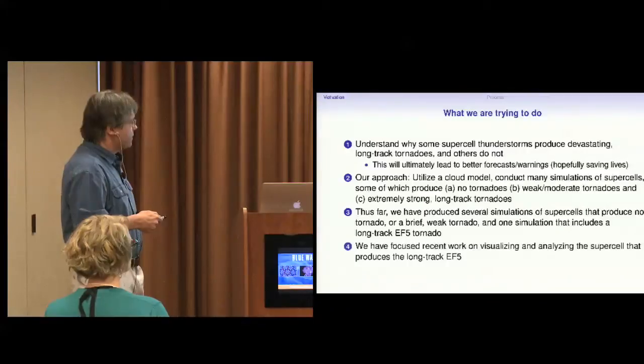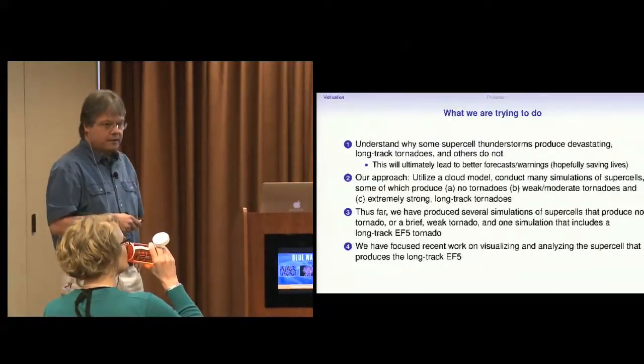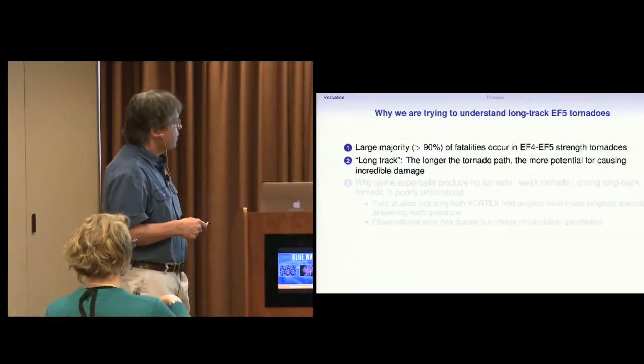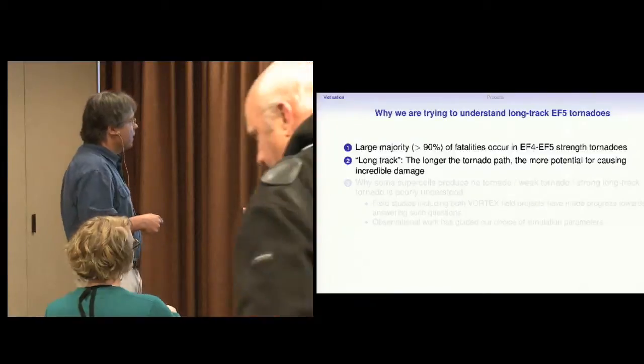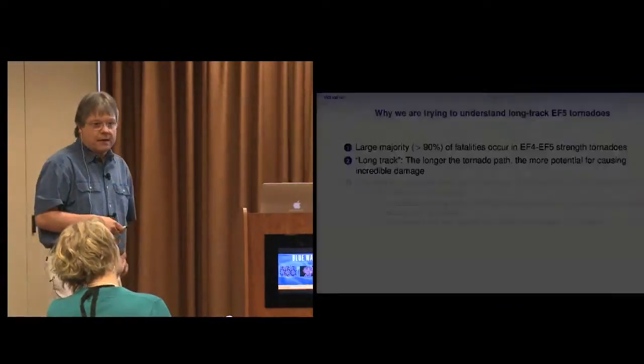We have managed to do this, and what I've been focusing on recently is visualizing and analyzing the simulation that actually happened about a year ago. So about 90% of the fatalities occur in the biggest, strongest tornadoes. Long track just means the path is long. The potential for producing a lot of damage is much higher.